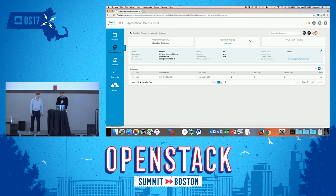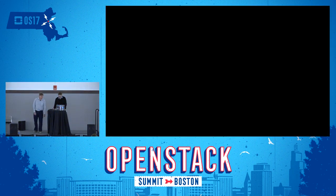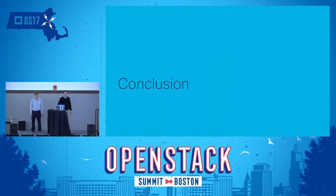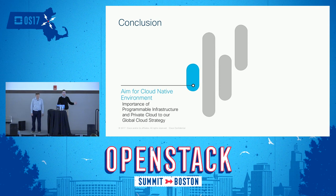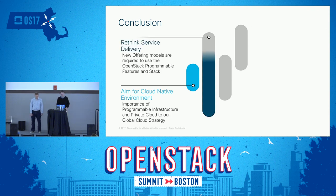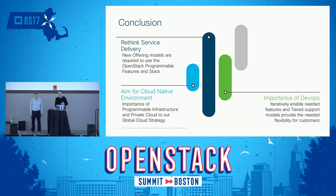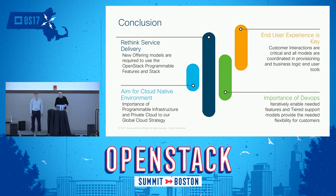We only have a few minutes left so that was the end of the presentation. The conclusion is simply: since the industry and the future are going cloud-native — and that's Cisco's global cloud strategy too — we need to make sure we embrace it and our application teams embrace it. We need to rethink how we do service delivery because we're fundamentally changing the service. DevOps is critically important to deploy iterative new versions of the technology, and user experience must be at the center of everything. It needs to be simple, and that's still a challenge for us at Cisco.